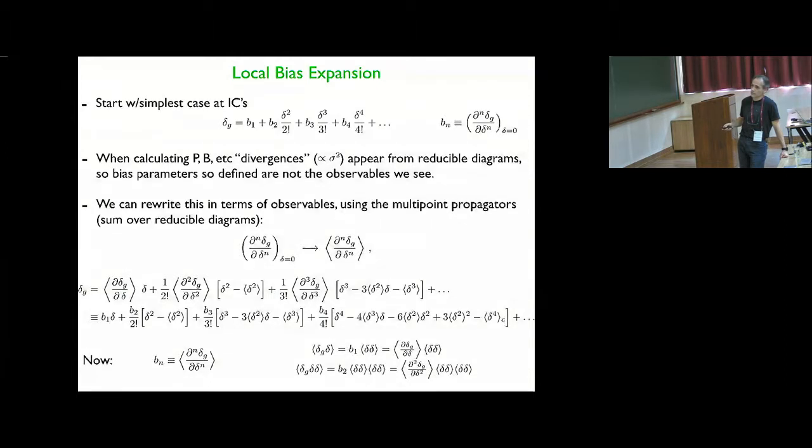they're actually observables. And these numbers are the numbers that you actually measure in simulations. For example, when you cross-correlate galaxies with matter and divide by matter, or you do the same for the three-point function and so on. So this is a convenient way of recasting this expansion so that no divergences appear when you calculate observables.